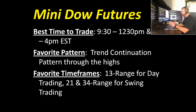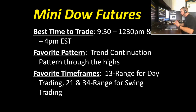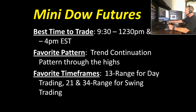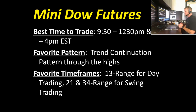My favorite pattern on the Dow is the trend continuation pattern through the highs. One characteristic of the Dow is we're going to be breaking the highs as we test them, so I'll look for a breaker pattern — or what I call a trend continuation pattern — buying those highs. I don't scalp the Dow; it's far too whippy and unpredictable. I'd look for day trades and position trades using a thirteen-range chart for day trading, a twenty-one or thirty-four range for swing trading, supplemented by a thirty-minute or sixteen-range chart as well.